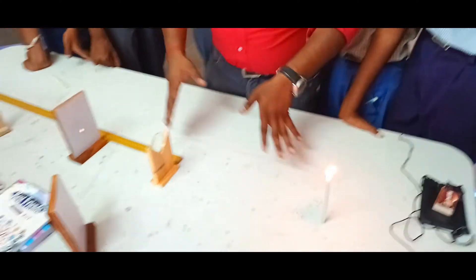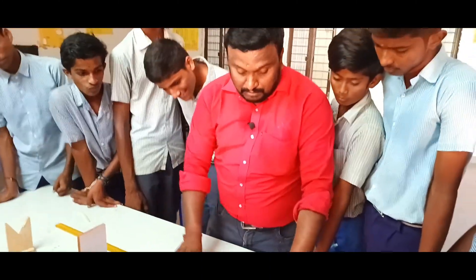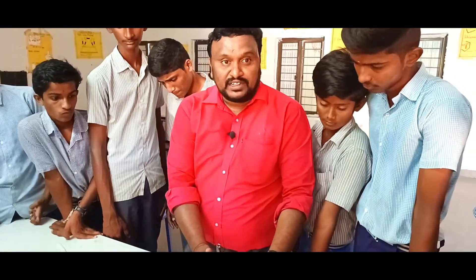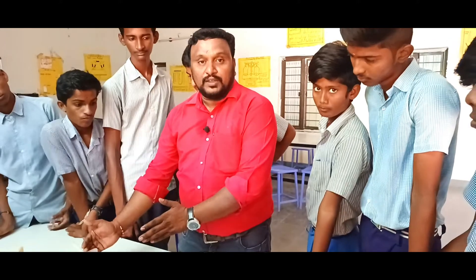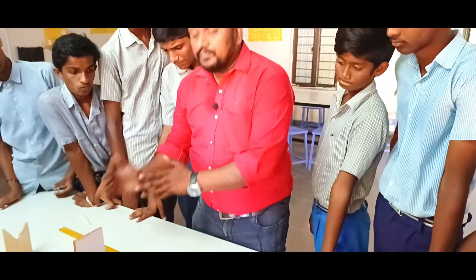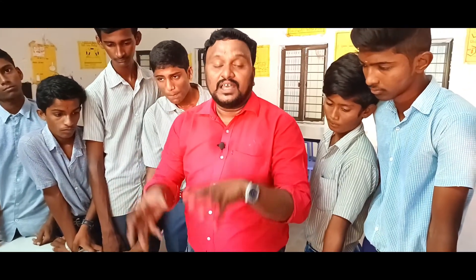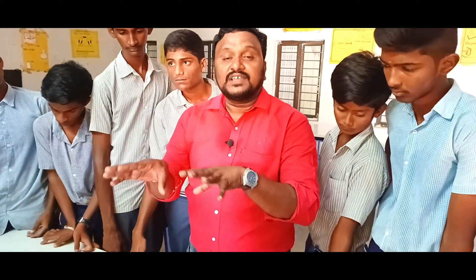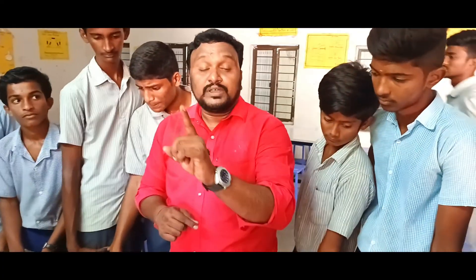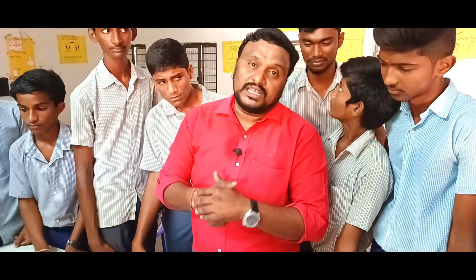We have to repeat the same experiment procedure by changing the U values to find out the V values. Every time we substitute the U and V values in the lens formula, we will get the 1/F value, and that should be noted in tabular form. Finally we have to find out the focal length of the given lens.